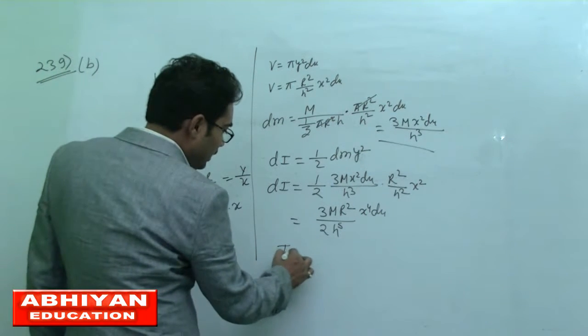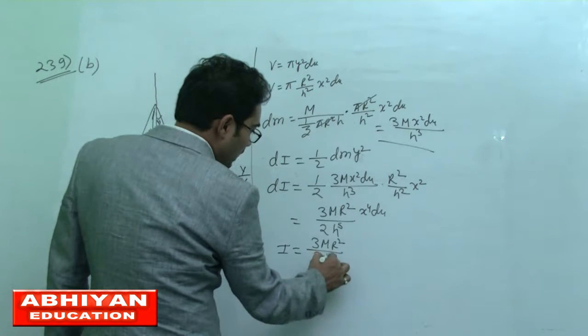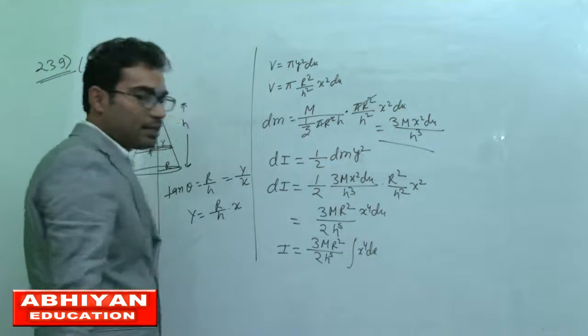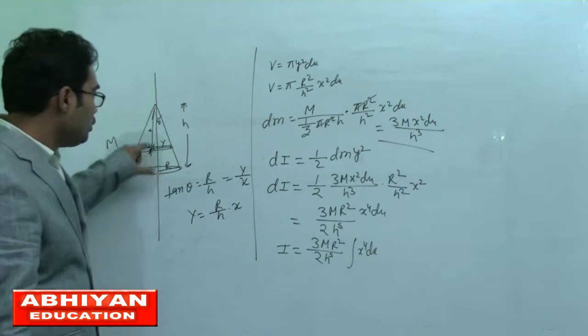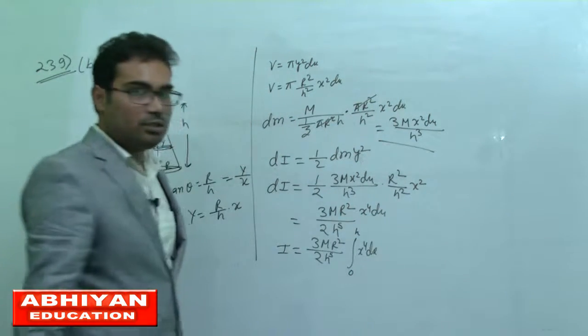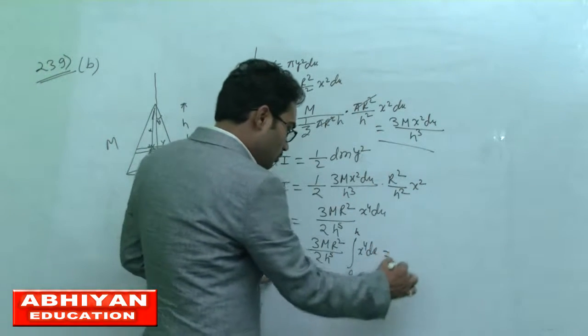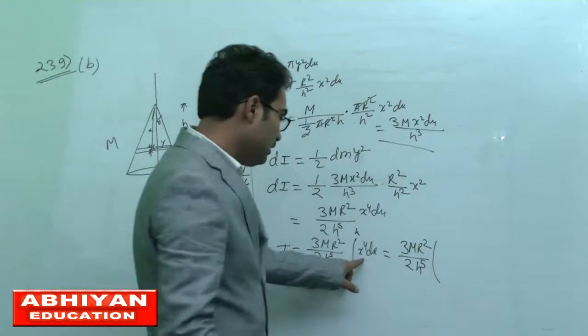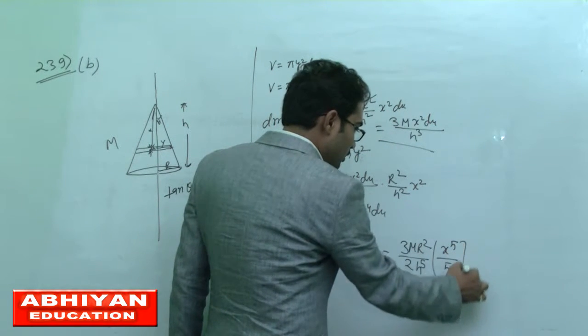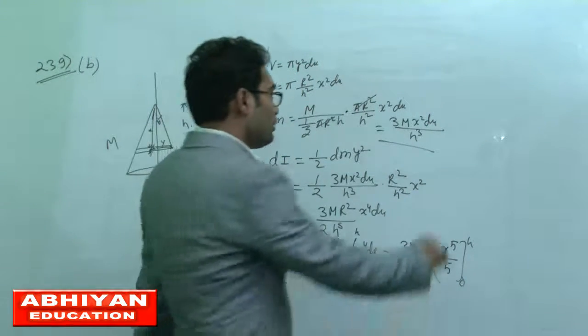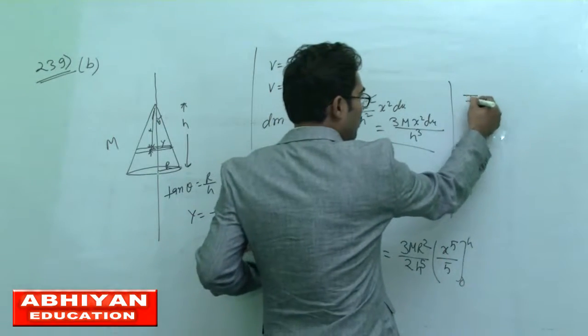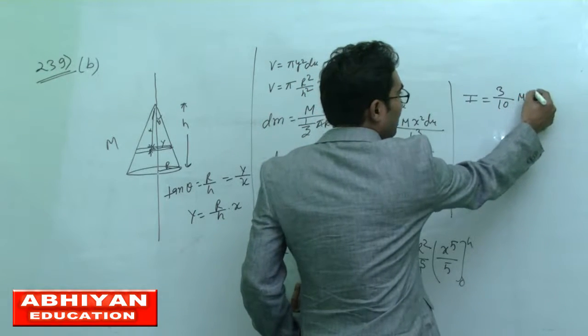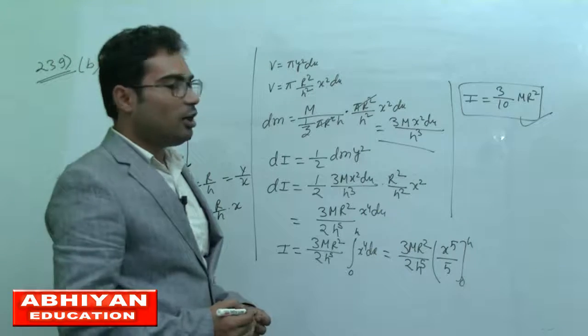It means I equals 3M R square by 2 H to the power 5, integration of x to the power 4 dx from 0 to h. So moment of inertia equals 3M R square by 2 H to the power 5, and integration of x to the power 4 is x to the power 5 by 5, from 0 to h. After solving this equation, moment of inertia is found as 3 by 10 M R square. This is the moment of inertia of the solid cone.